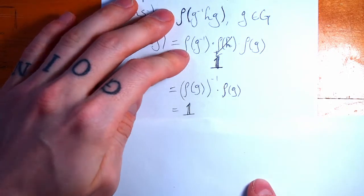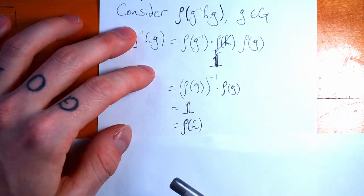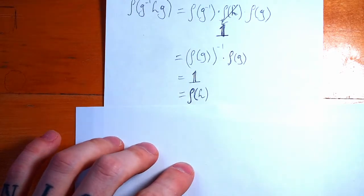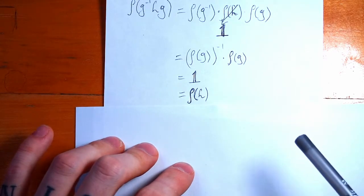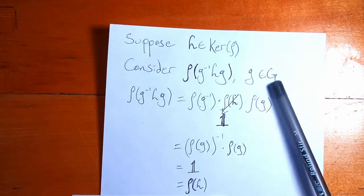That's some matrix inverse times some matrix. Well, you bet your bottom dollar that that is going to cancel out, and we're going to get the identity. But hey, the identity is just rho of h because we know that it's in the kernel. So we've shown that the kernel is invariant under conjugation and is therefore a normal subgroup of our group G.